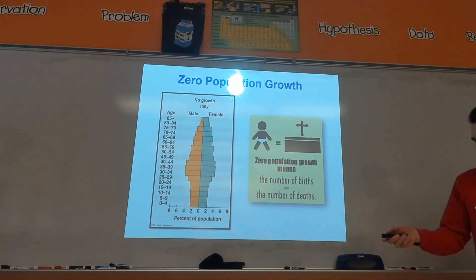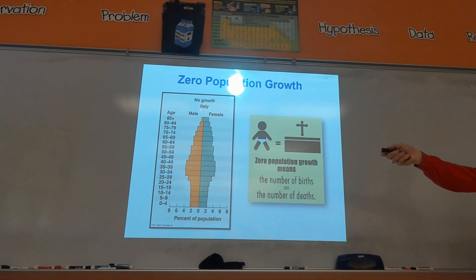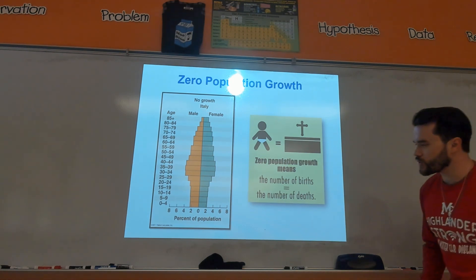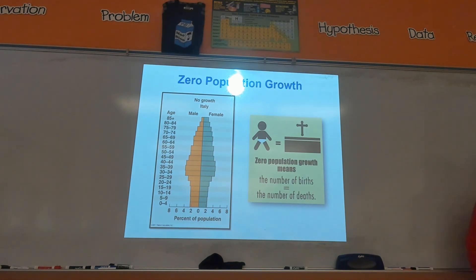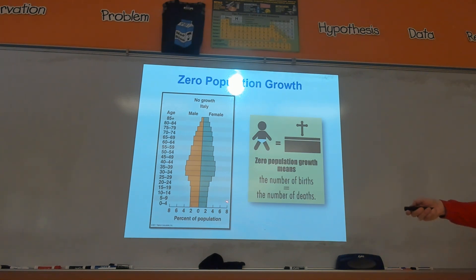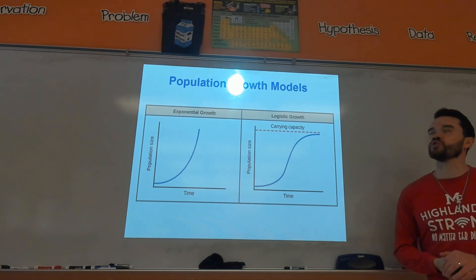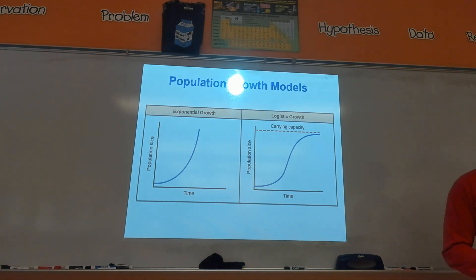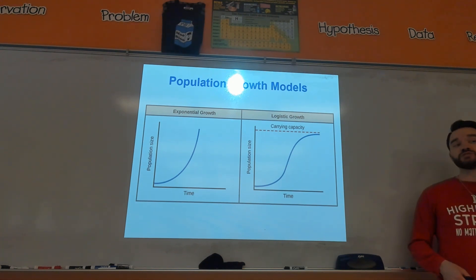This is called an age structure diagram for a certain country — in this case, Italy as of 2011. Italy has a zero-growth population. The thing that usually gives it away is the number of younger people. In Italy, you can see how small their younger population is compared to the rest. There are two population growth models you need to know, especially being able to identify their graphs and which graph goes to which model.